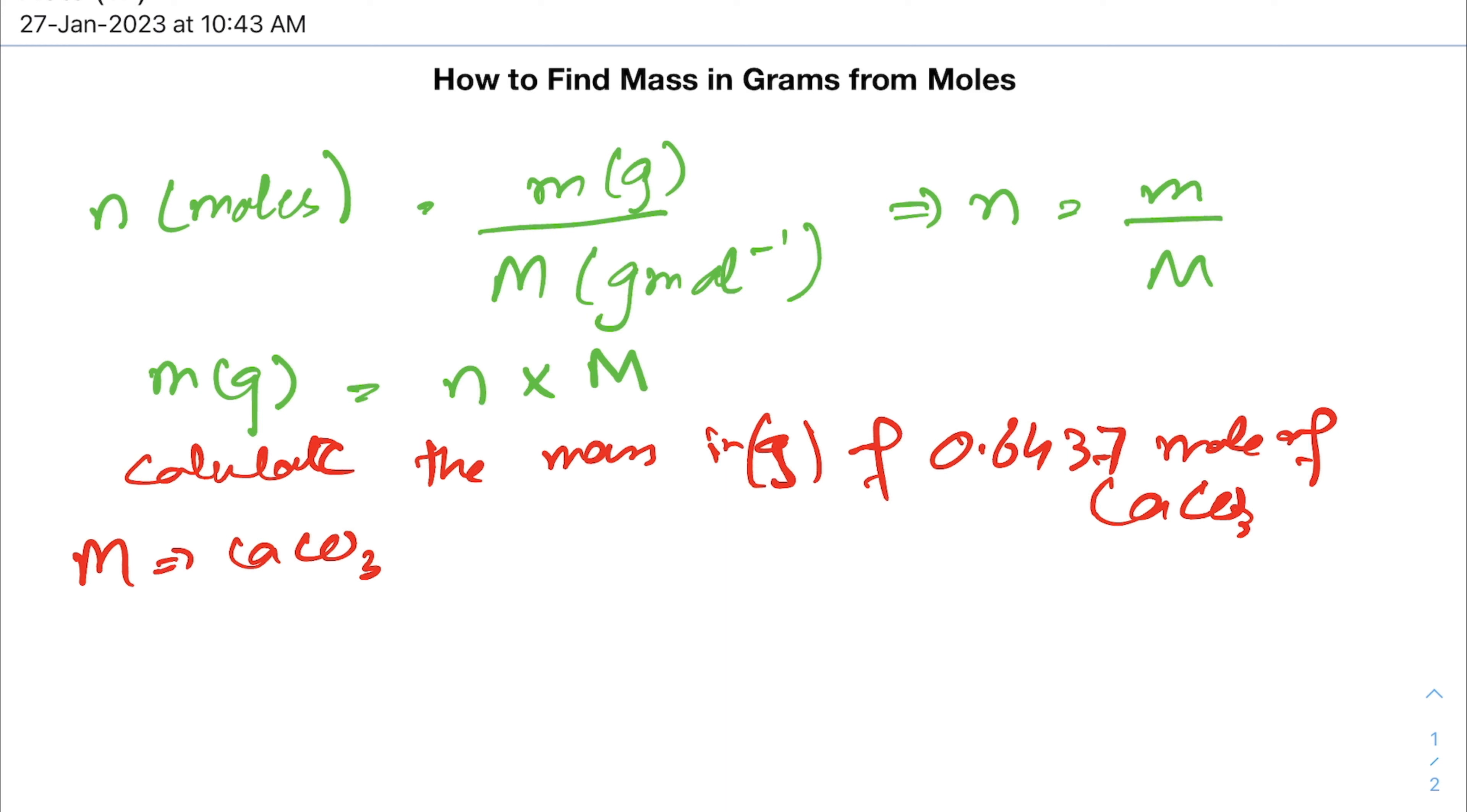For calcium, we have the molecular mass of 40.08 grams per mole. For carbon, it's 12.01 grams per mole, and for three atoms of oxygen, we calculate the mass.